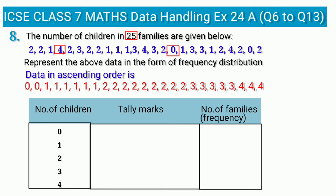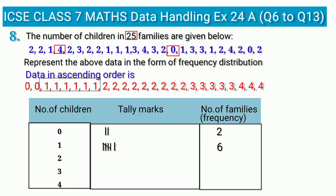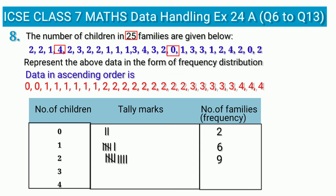From the ascending order data: 2 families have zero children, so we draw two tally marks and frequency is 2. Six families have one child — we draw four strokes, a crossed fifth line, and one more stroke, giving frequency 6. Nine families have two children — frequency 9. Five families have three children, and three families have four children. Adding all frequencies gives 25 total families.